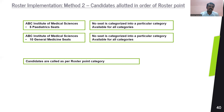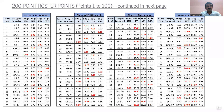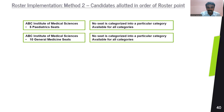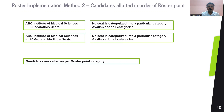Candidates are called as per roster point category, not as per rank order. The reservation policy has to be implemented, so the allotment may not necessarily follow rank order — it follows roster point order, which is the entitlement order. The first candidate to be called is a UR candidate, the second also UR, and so on, with the fourth being an OBC candidate. Think of it like offline counseling where candidates are called one after the other — the same process applies in online allotment.